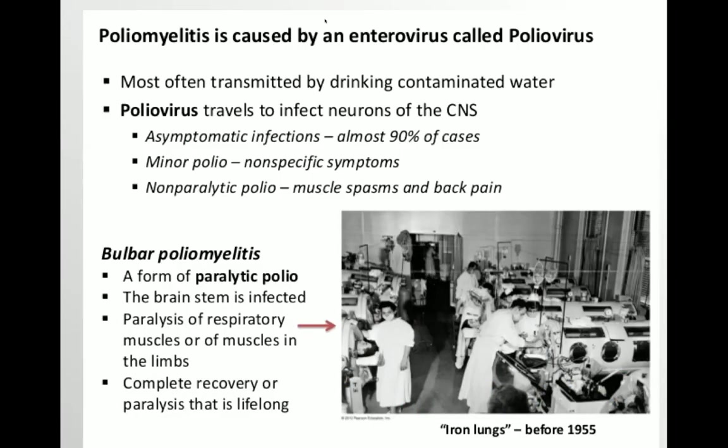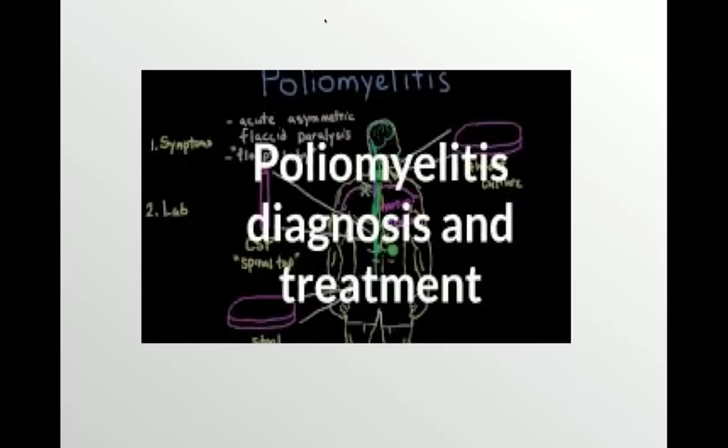It is transmitted by the fecal-oral route, especially by drinking contaminated water, and it infects the neurons of the CNS, resulting in various clinical manifestations — the most important being non-paralytic polio infection or spinal or bulbar poliomyelitis. We have discussed this in detail in the previous lecture.